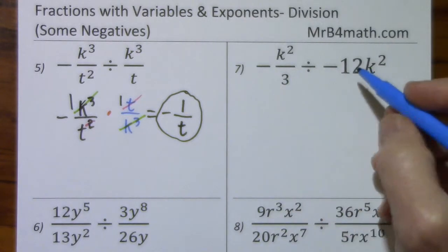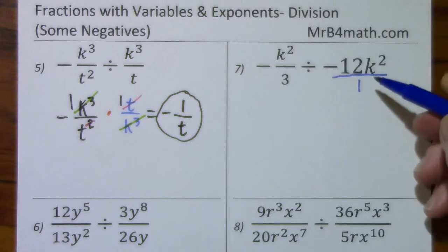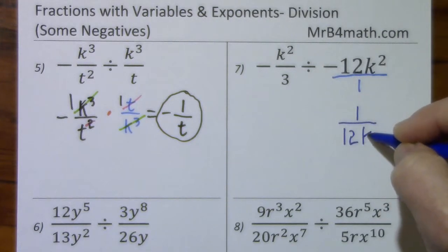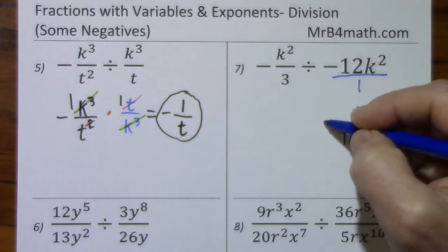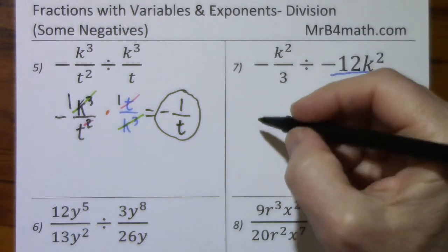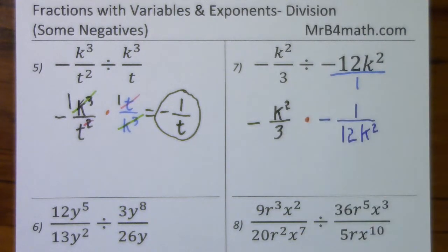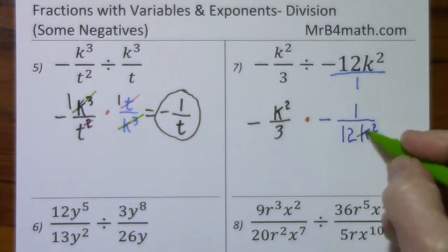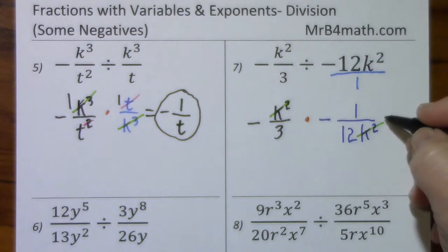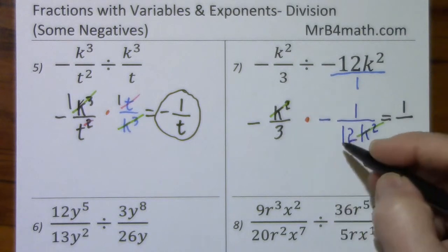Looking at problem 7, we need all fractions, so I'll put this over a 1. Now we take the reciprocal of the divisor. Keep up with our negative. Change division to multiplication. Bring down what's left — negative k squared over 3. Reduce if possible: k squared cancels k squared. Nothing else will reduce. Negative times negative is a positive, so we simply have 1 in the numerator. 3 times 12 is 36.